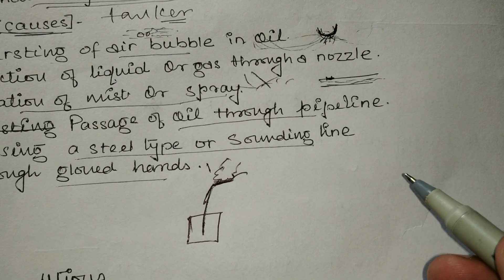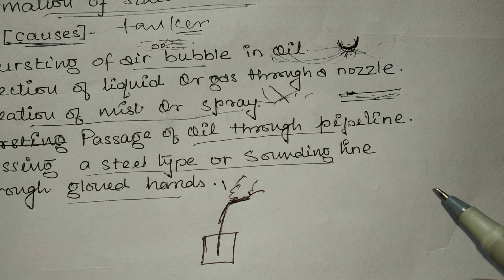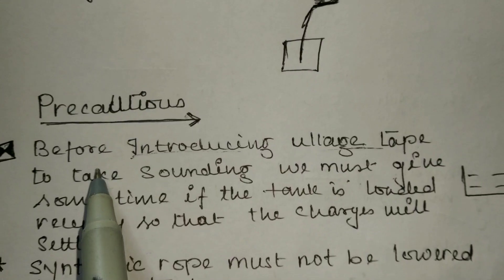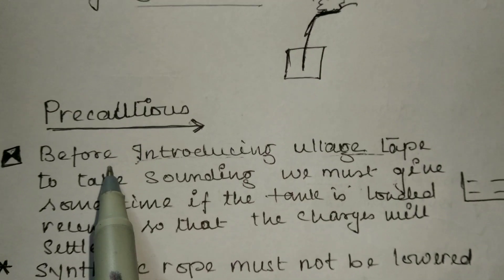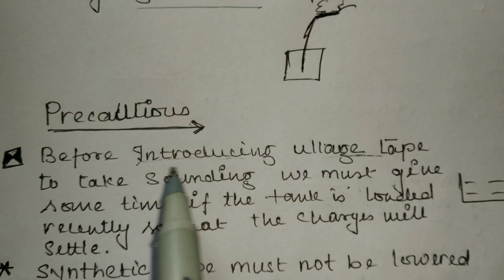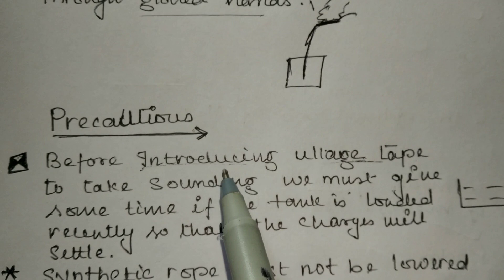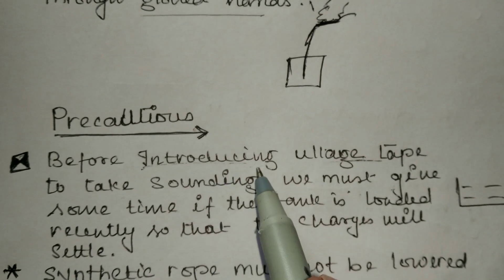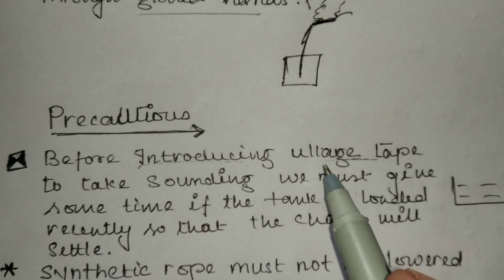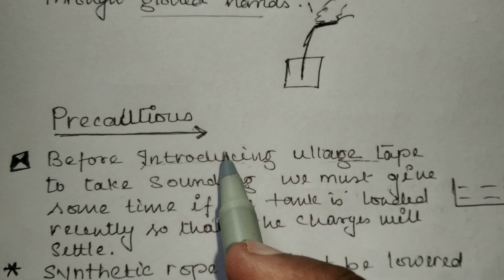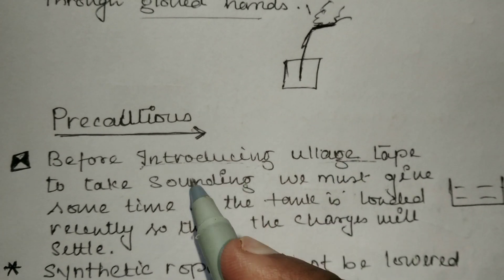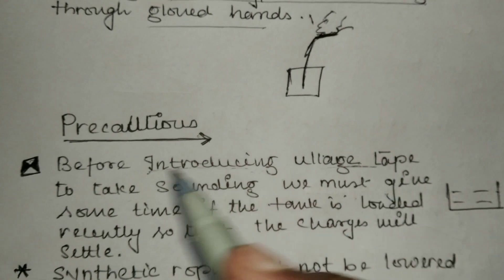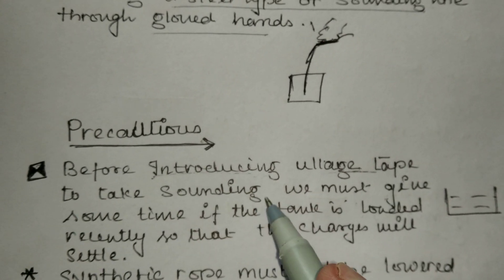These are the important causes which can create static charge on board tankers. There are many other reasons which are not so important. We will now see the precautions that need to be taken to avoid the formation of static charges.